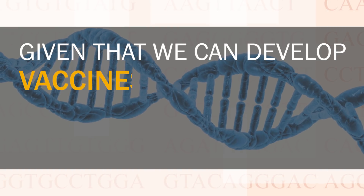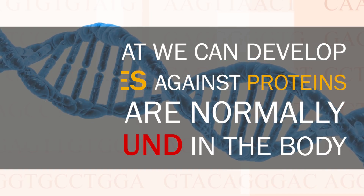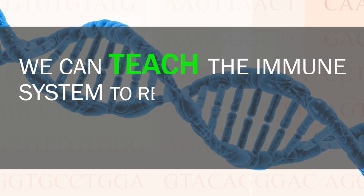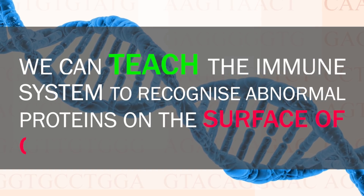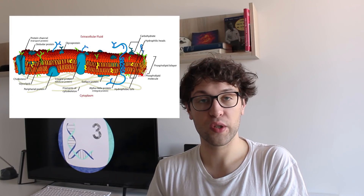Given that we can develop vaccines against proteins which are normally not found in the body, we can teach the immune system to recognize abnormal proteins on the surface of cancer cells. Sometimes we find proteins in cancer cells which are highly over-expressed or which are only found during early development. In other cases, we find mutated versions of proteins on the surface of cancer cells, which we call neo-antigens. Neo-antigens are produced by cancer-specific DNA mutations and therefore have a unique sequence. If cancer cells sufficiently present such proteins to the immune system, we can develop an effective vaccine.